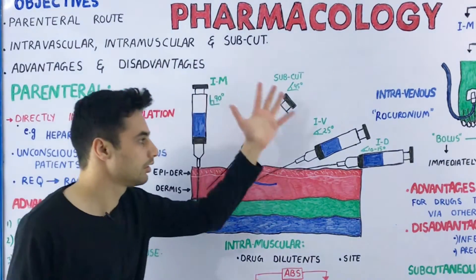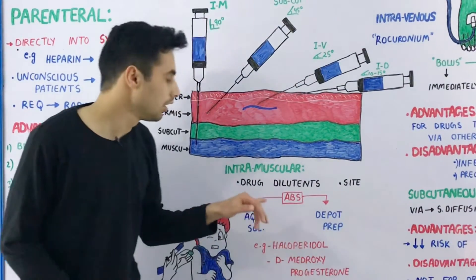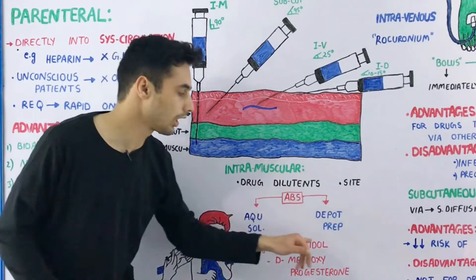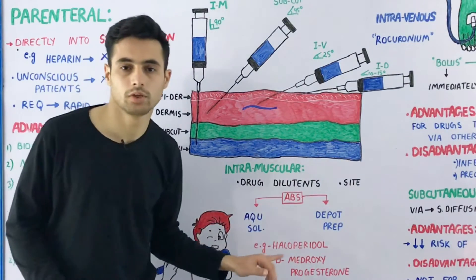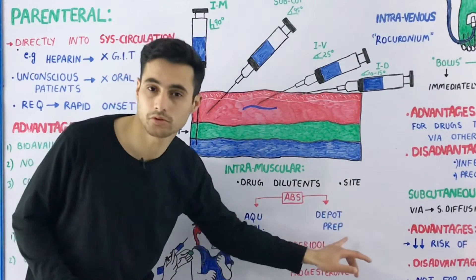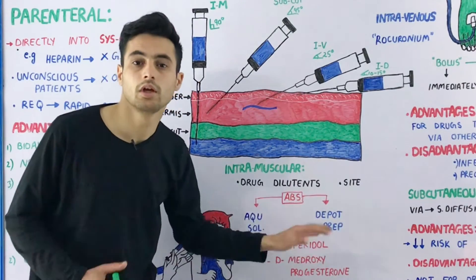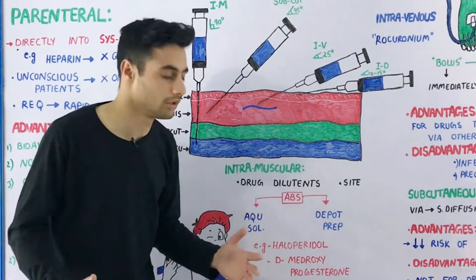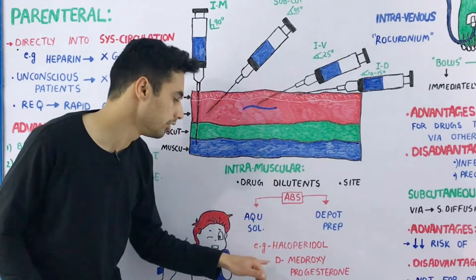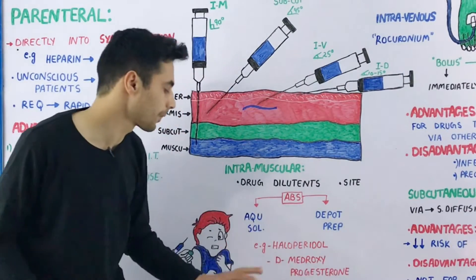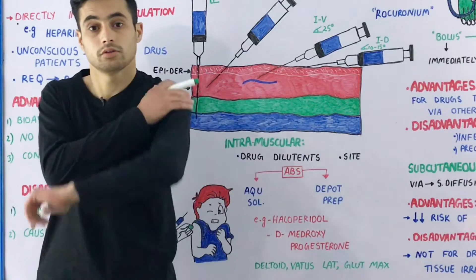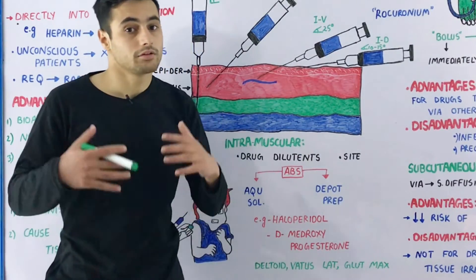For intramuscular injections, absorption depends on two factors: whether the solution is in aqueous or non-aqueous form. If the solution is aqueous, absorption is very fast compared to depot preparations, which are non-aqueous and have slower absorption. Major drugs given intramuscularly include haloperidol and medroxyprogesterone. The three major muscles involved are the deltoid, the gluteus maximus, and the vastus lateralis.